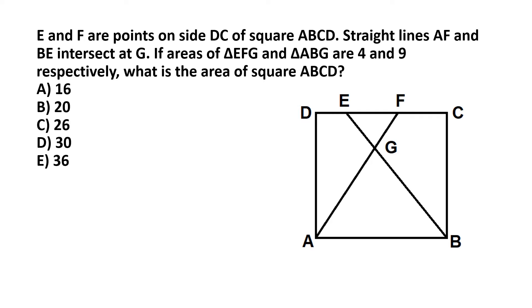We start this problem by first noting from the figure that we have two similar triangles, namely triangle ABG and triangle EFG. And why are these two triangles similar? Well, we have this straight line AF intersecting the two parallel lines sides AB and DC of the square, and so we have these angles that are marked in red as alternate angles which should be equal.